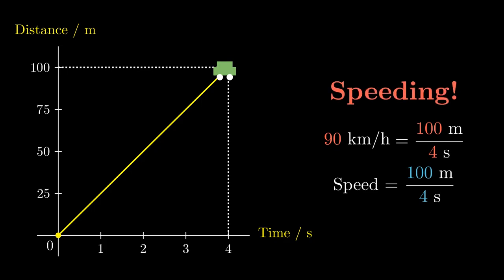However, this assumes that the car travels at a constant speed. In reality, the speed of the car could have varied as it's traveling from 0 meters to 100 meters.